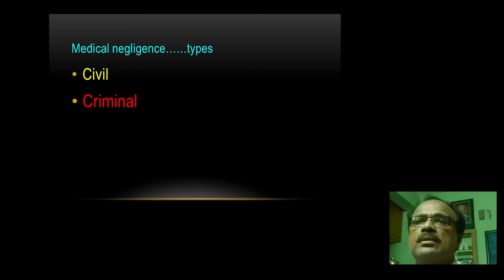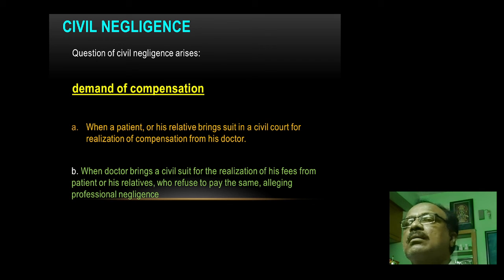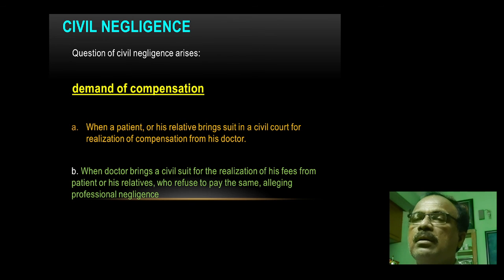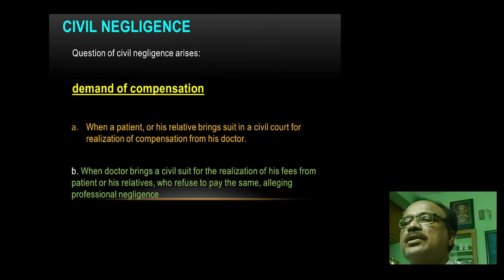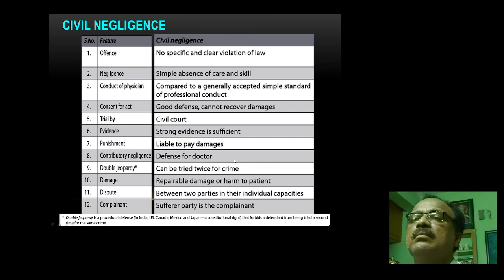Types of negligence: civil negligence and criminal negligence. Civil negligence involves demand for compensation or penalty between two parties — the patient and the doctor or the patient's relatives. Civil suits are related to money matters. The characteristic features of civil versus criminal negligence will be discussed in the next class.